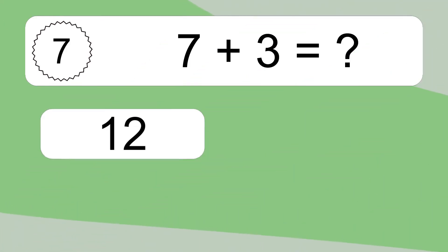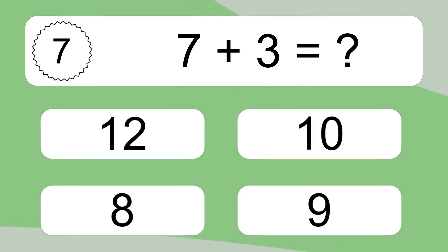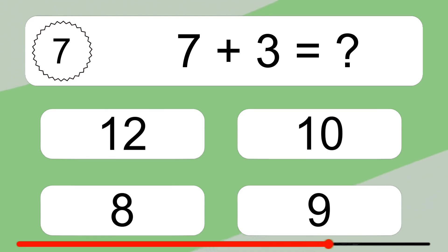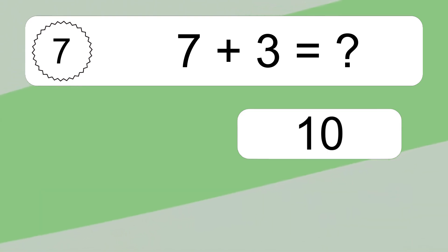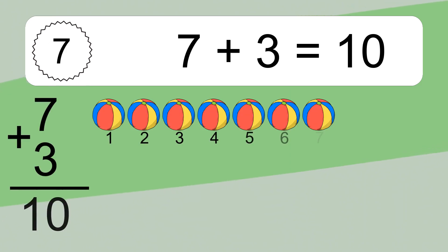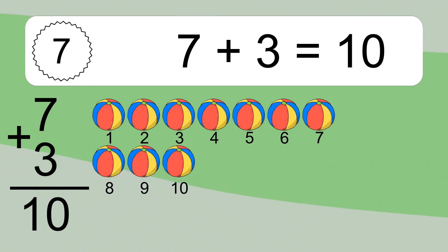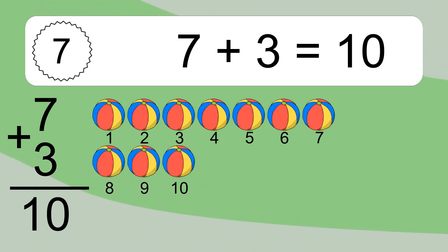7 plus 3 equals what? 7 plus 3 equals 10. Let's count it: 1, 2, 3, 4, 5, 6, 7, 8, 9, 10.